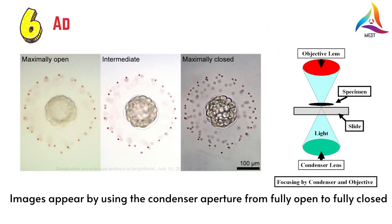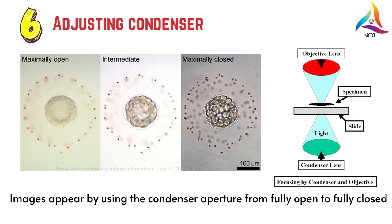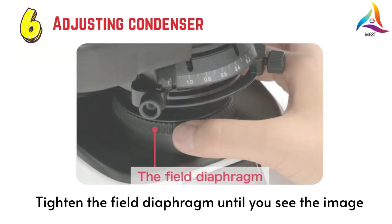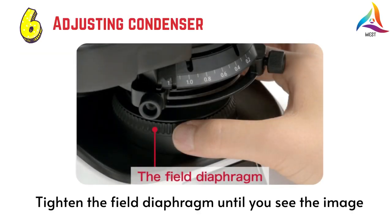The microscope condenser regulates the intensity of the light by closing or opening the condenser diaphragm, or by adjusting the height of the condenser. You can use it according to the following steps. Tighten the field diaphragm until you see the image through the eyepiece.